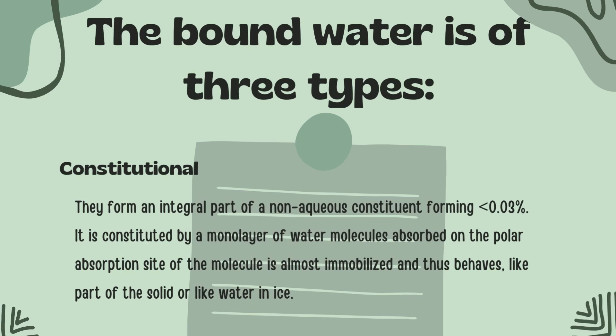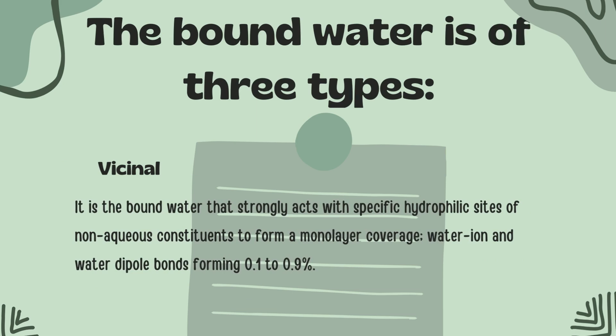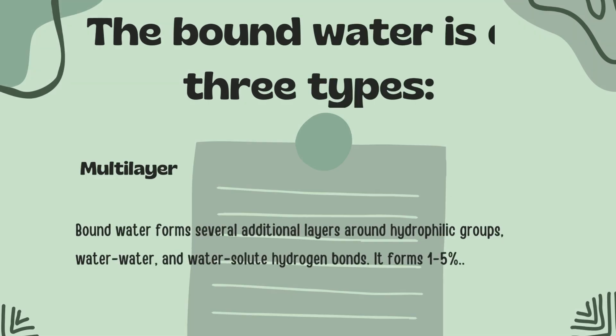Second is vicinal bound water, which strongly interacts with specific hydrophilic sites of non-aqueous constituents to form a monolayer coverage through water-ion and water-dipole bonds, forming 0.1 to 0.9%. And lastly, the multilayer type: bound water forms several additional layers around hydrophilic groups through water-to-water and water-to-solute hydrogen bonds, forming 1 to 5%.